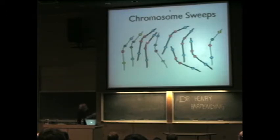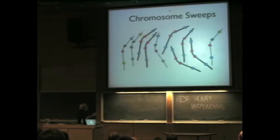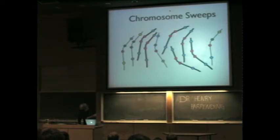So every time you see the new mutation — this red — it's on a chromosome that's blue, red, red, blue, blue, red, red, blue, blue, red, red, blue. They're all the same, because they all have a very recent common ancestry.